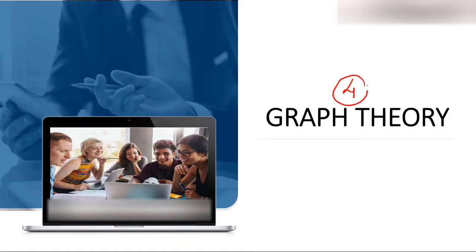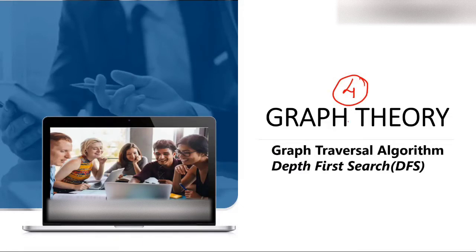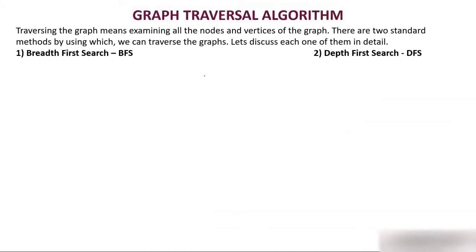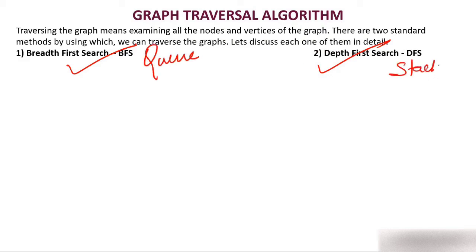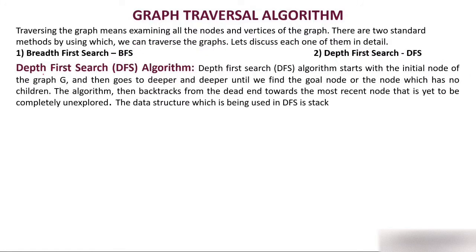Today we are discussing the fourth video of graph theory. We'll discuss the graph traversal algorithm which is Depth First Search. In the third video we discussed Breadth First Search, that is BFS, and today we'll discuss DFS. There are two methods of traversing a graph: Breadth First Search and Depth First Search. In BFS we use a queue data structure; in DFS we use a stack data structure.